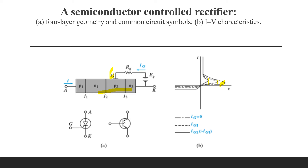The added supply of holes and accompanying injection of electrons from N2 into P2 — as discussed earlier, electrons move from N2 to P2 and holes move from P1 to N1. After triggering, holes start moving from P1 toward the cathode. Then we apply the gate voltage and the gate injects holes into P2. Similarly, some electrons will move from N2 to P2.